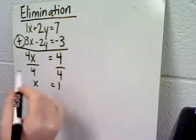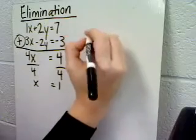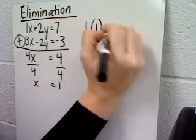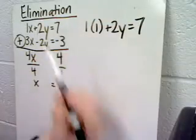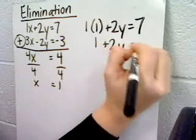To get the y value, you just substitute this x value back into the original problem. So, 1 times 1 plus 2y equals 7 would be the first equation with a 1 substituted for x. And that gives us 1 plus 2y equals 7.